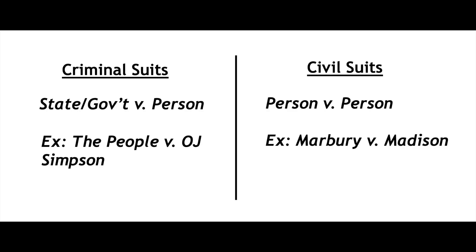Now let's talk about the differences between criminal and civil trial by combat. In order to discuss those differences, we first have to have a basic understanding of what the differences between a criminal and civil action are. The main difference is who is actually bringing the suit against a certain person. Criminal cases are the result of a person committing a crime, and they are being prosecuted by the state or by the government. So a criminal suit is one in which it is the government against a person. A civil suit, on the other hand, is typically a person against a person.